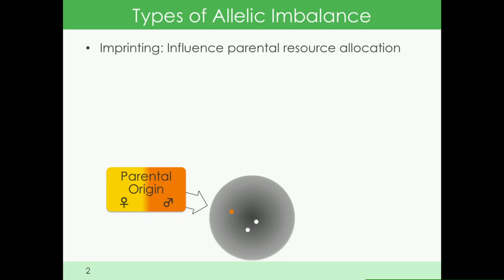Why does allelic imbalance happen? We have two copies, which is great because we can compensate for loss of one copy. So why would you ever not take advantage of that?